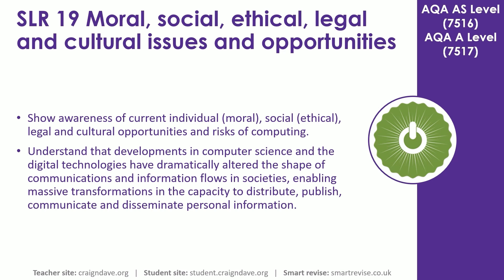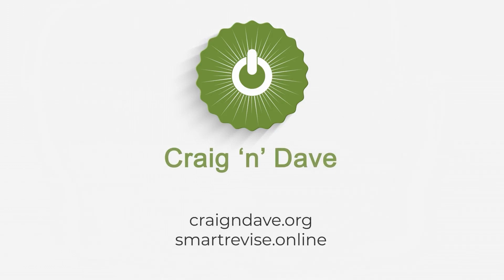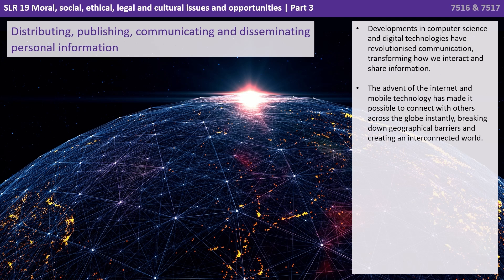Developments in computer science and digital technologies have dramatically altered the shape of communications and information flows in societies, enabling massive transformations in the capacity to distribute, publish, communicate and disseminate personal information. These developments have revolutionised communication, transforming how we interact and share information.